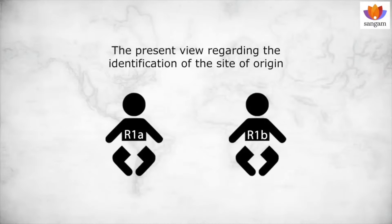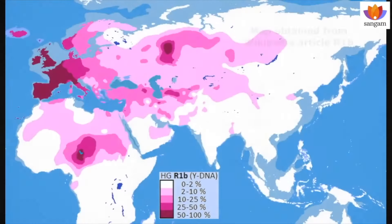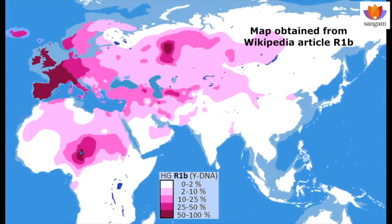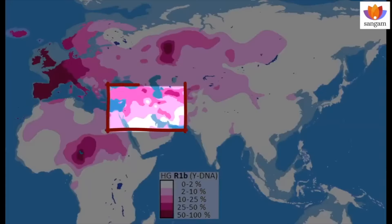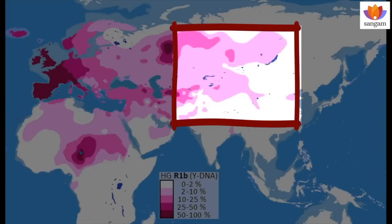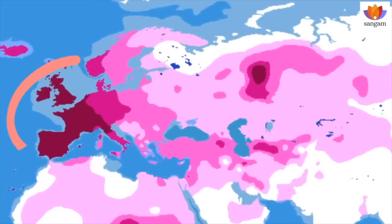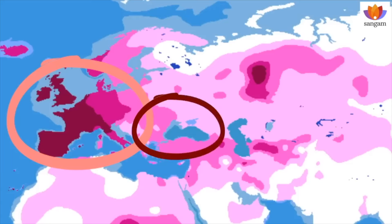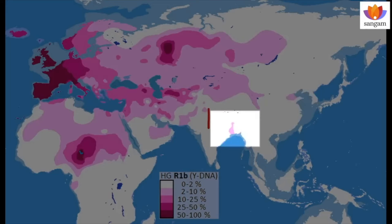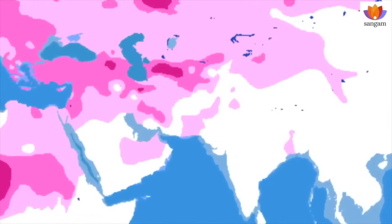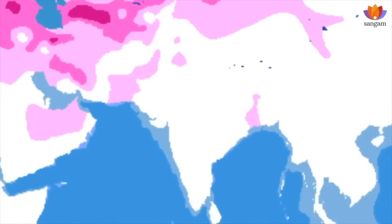Now let us discuss the present view regarding the identification of the site of origin of R1-Bravo and R1-alpha haplogroups. This is the present map available regarding the distribution of R1-Bravo haplogroup in Y chromosome in the world. R1-Bravo haplogroup is found in Europe, Middle East, Northern Africa, and in scattered form in Asia. It is observed that though the concentration of R1-Bravo is much more in Western Europe, the European steppe located in extreme Eastern Europe is considered as its site of origin, since older divisions of R1-Bravo are found in the East. But in spite of having several pockets of R1-Bravo further east and on the Bengal coast, any Eastern location as the probable site of origin of R1-Bravo haplogroup is never considered.